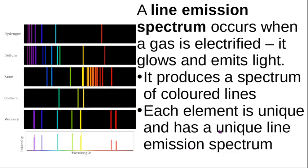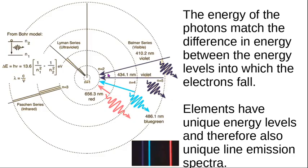Every element has a unique line emission spectrum because of the Bohr theory of the atom, where you have specific energy levels inside the atom. It doesn't matter where you are in the world — if you have a sample of helium and you electrify it, you will always get the same colors. For neon, as you may know from neon lights, they are heavy on the red — usually a nice pinky-red color.